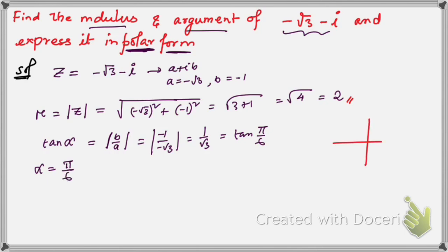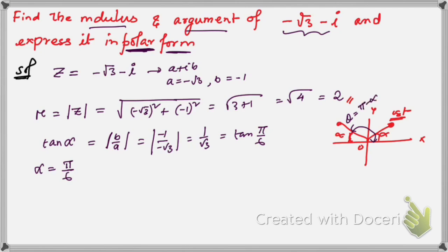As I explained in the last lecture: if the point representing the complex number is in the first quadrant and the line joining the origin and the point makes angle α with the positive x-axis, then the argument θ equals α. When it is in the second quadrant, θ = π - α. When it is in the fourth quadrant, θ = -α. When it is in the third quadrant, θ = -(π - α) = -π + α.